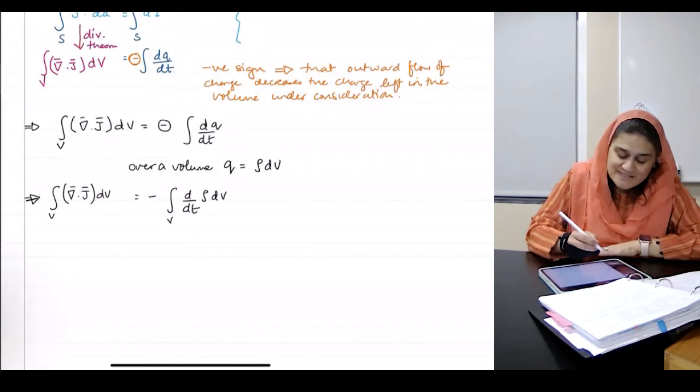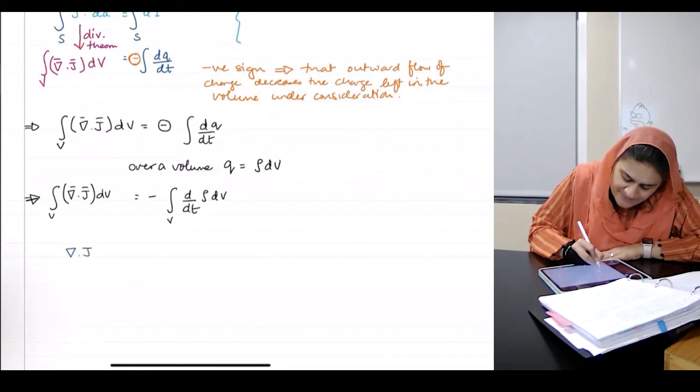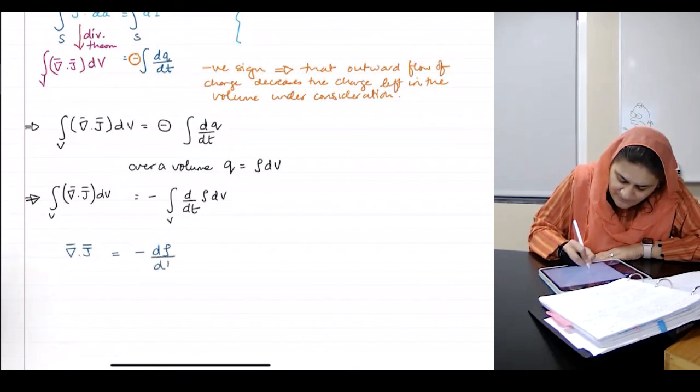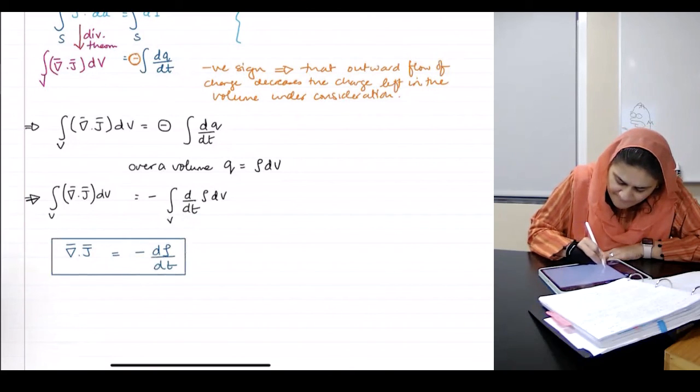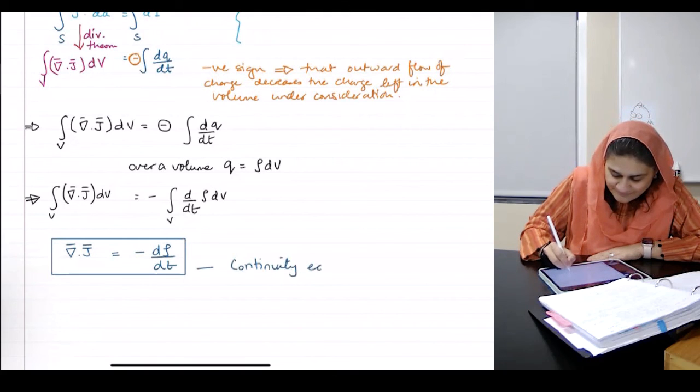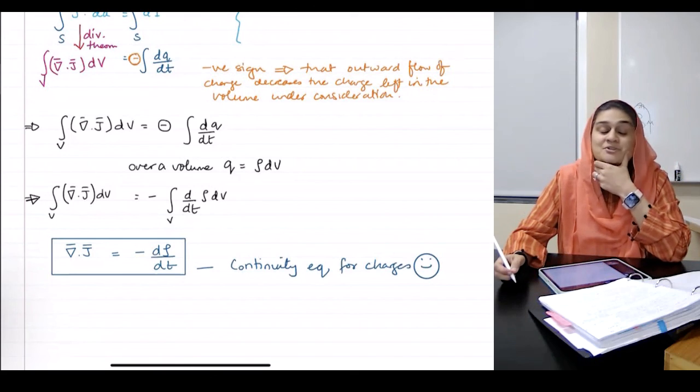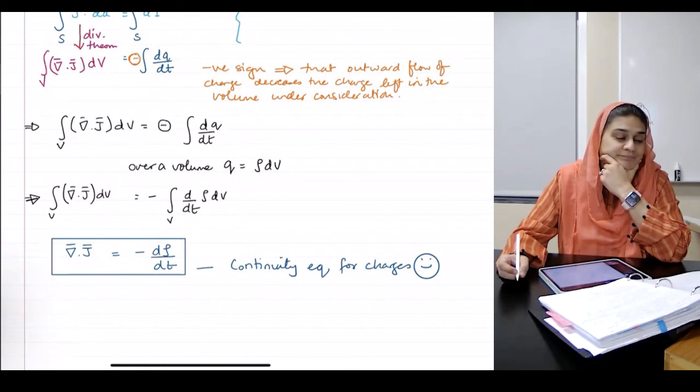May I simplify this to be written as, drumroll, del dot J equals minus d rho over dT. And that is called the continuity equation.